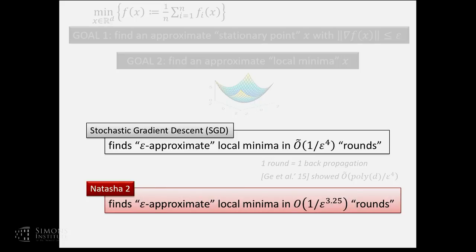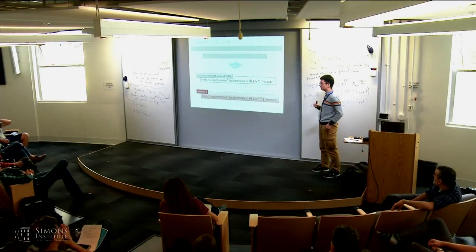Throughout this talk, I'm going to refer to SGD as having complexity order one over epsilon to the fourth power. I am going to introduce an algorithm called Natasha 2 that can find the same kind of local minima in a smaller number of rounds, without additional assumptions. Let me come back to the exact assumptions in a few slides.